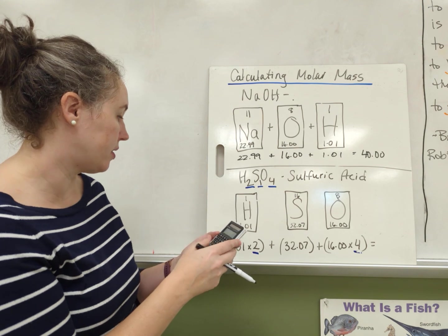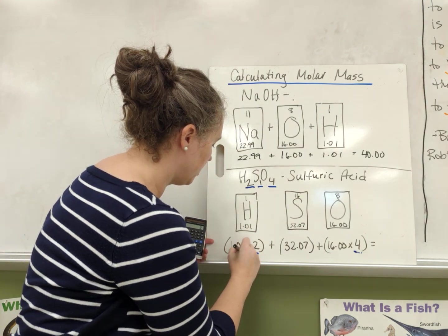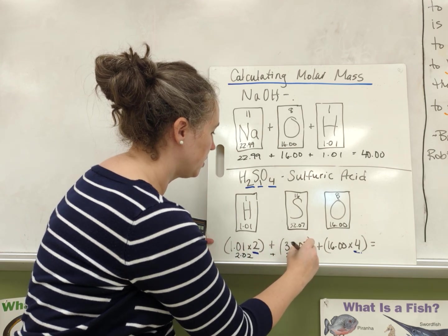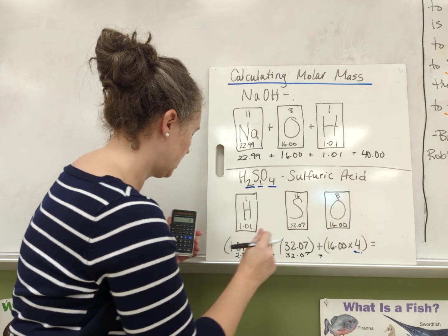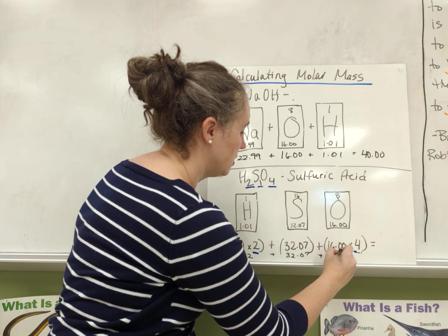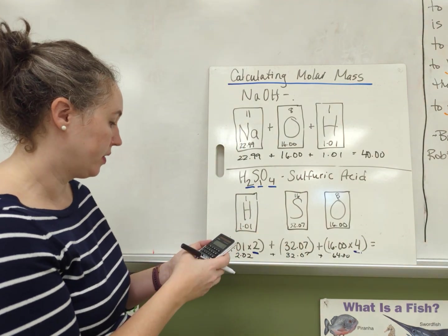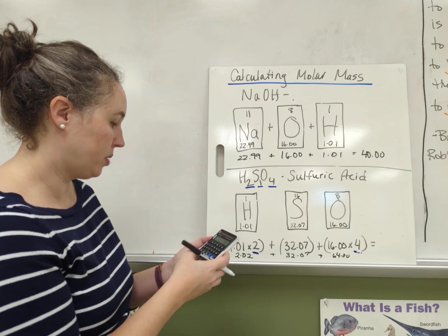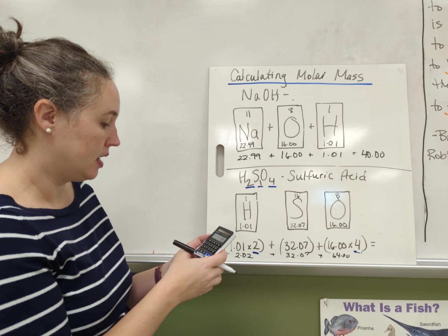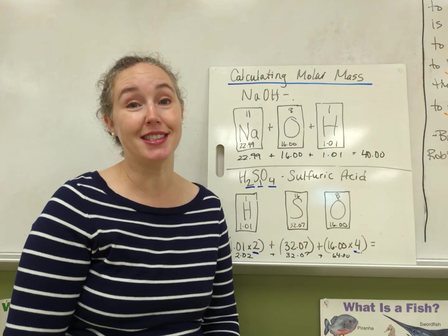So let's do that in our calculator. This is going to be 2.02 plus 32.07 plus 16 times 4 is 64.00. Add those three up.